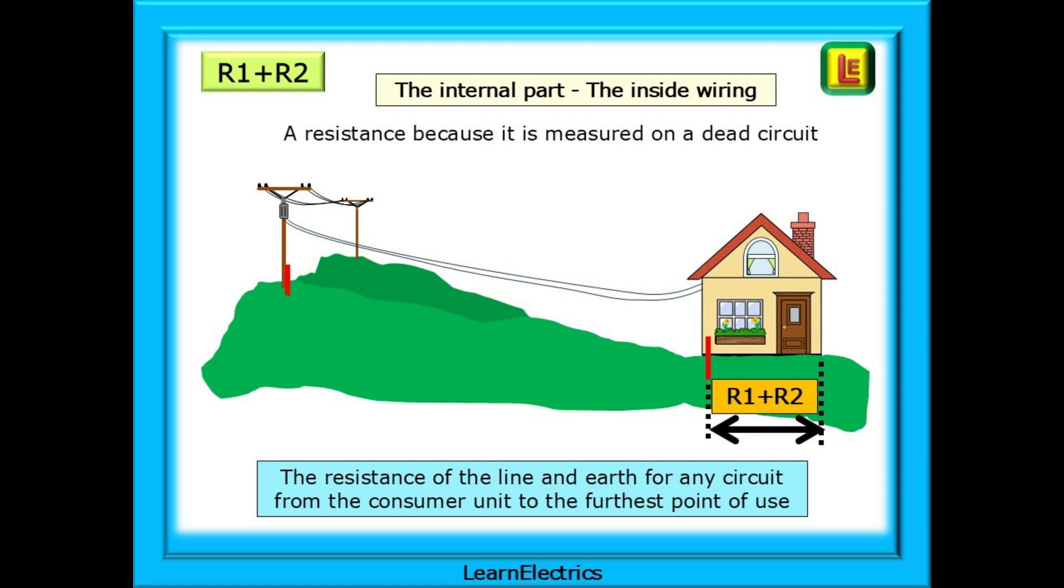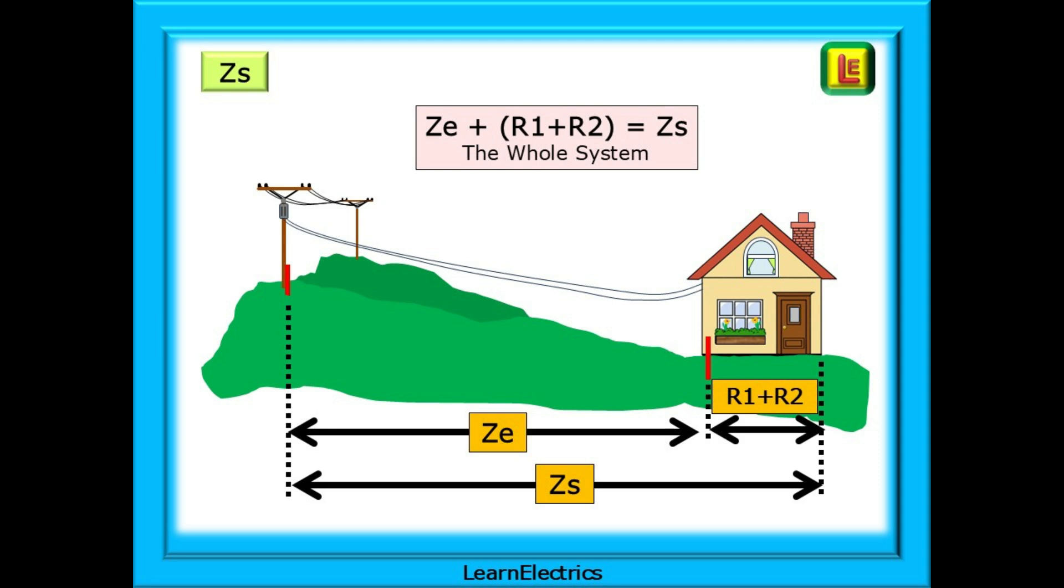R1 plus R2 is the internal wiring of the property, the inside wiring. We call this a resistance measured in ohms because it is measured on a dead circuit. It is the resistance of the line and earth for any circuit from the consumer unit to the furthest point of use in the house and back to the consumer unit. The lights will have an R1 plus R2, an immersion heater will have its own R1 plus R2, and so will the sockets. The whole thing, the whole wiring system, inside and outside, is called ZS, and it is made up of two parts.